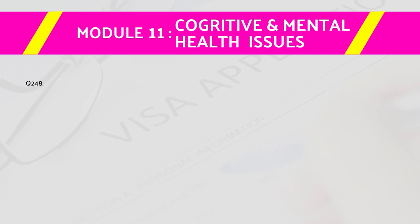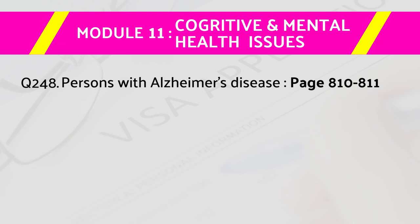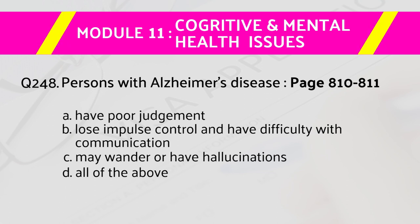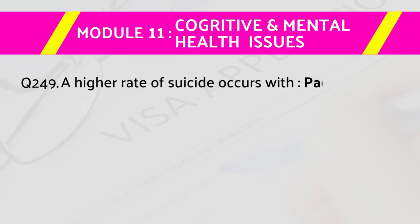Question number 248: Persons with Alzheimer's disease — page number 810 to 811. Answers are: a) have poor judgment, b) lose impulse control and have difficulty with communication, c) may wander and have hallucinations, d) all of the above. The right answer is d) all of the above.